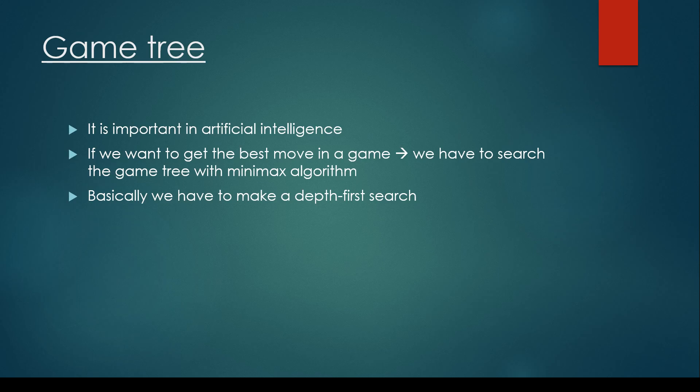The game tree is quite important in artificial intelligence. If we want to get the best move in a game, we have to search the game tree with the minimax algorithm, which is basically a depth-first search. You may ask why we have to bother about graph-related algorithms — because, as far as game trees are concerned, these kinds of graphs and tree-like structures are becoming more and more important.